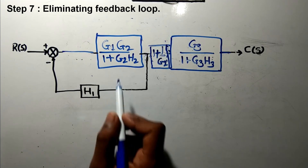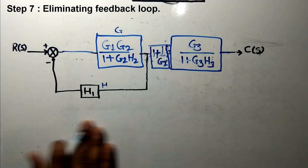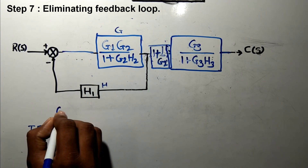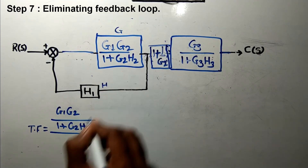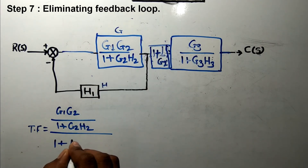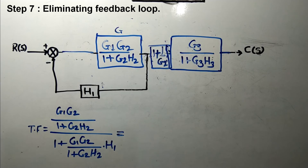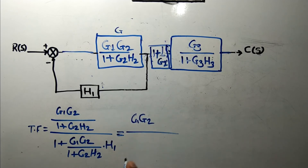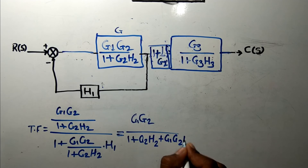Our next step is eliminating this feedback loop. Here G is G1·G2/(1+G2·H2) and H is H1. Applying the rule G/(1+GH), the transfer function equals G1·G2/(1+G2·H2) divided by 1 plus [G1·G2/(1+G2·H2)] multiplied by H1.